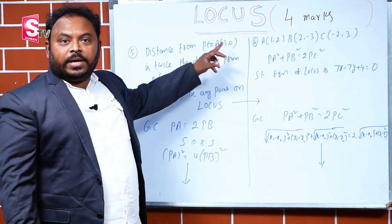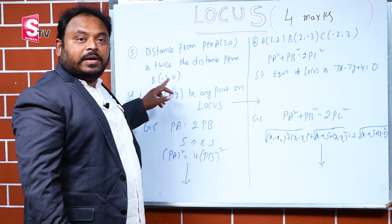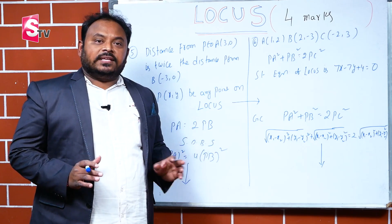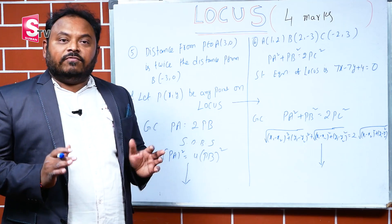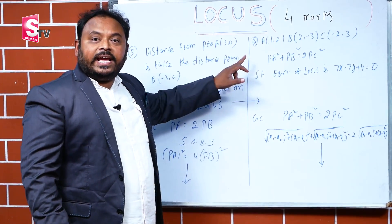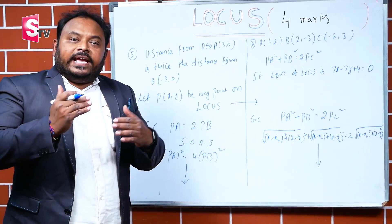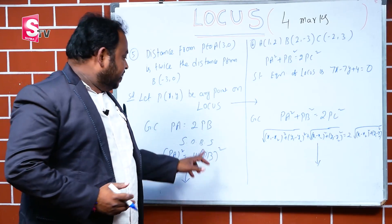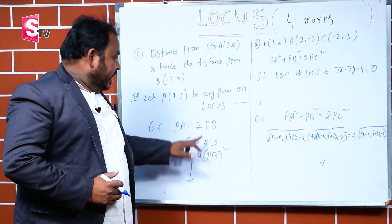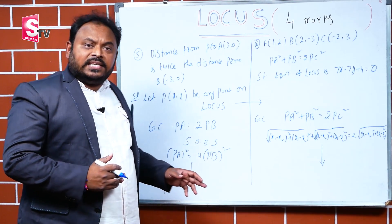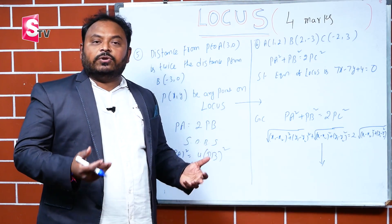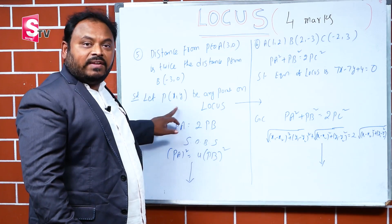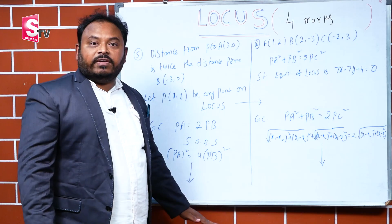Fifth problem: distance from P to A is twice the distance from P to B, where B is (-3, 0). Let P(x, y) be any point on the locus. The geometrical condition is PA = 2PB. Squaring on both sides: PA² = 4PB². Apply the distance formula — under root of (x₁ - x₂)² + (y₁ - y₂)² — substitute all values and solve to get the answer.